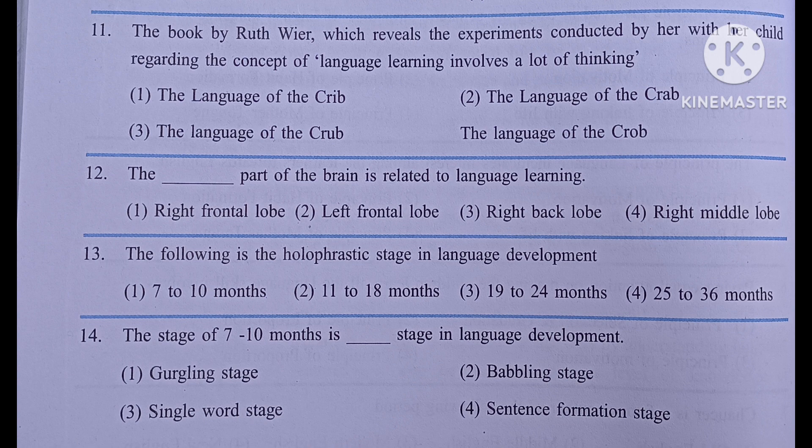The following is the holophrasing stage in language development: number one, 7 to 10 months; number two, 11 to 18 months; number three, 9 to 24 months; number four, 25 to 36 months. The answer is 19 to 24 months.